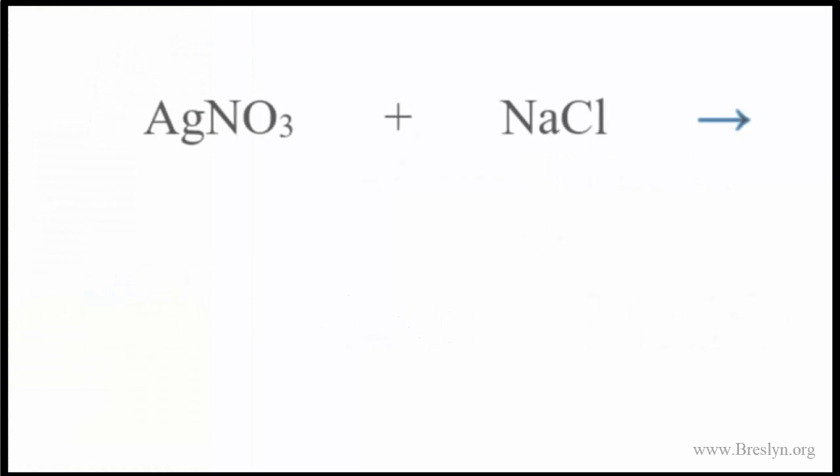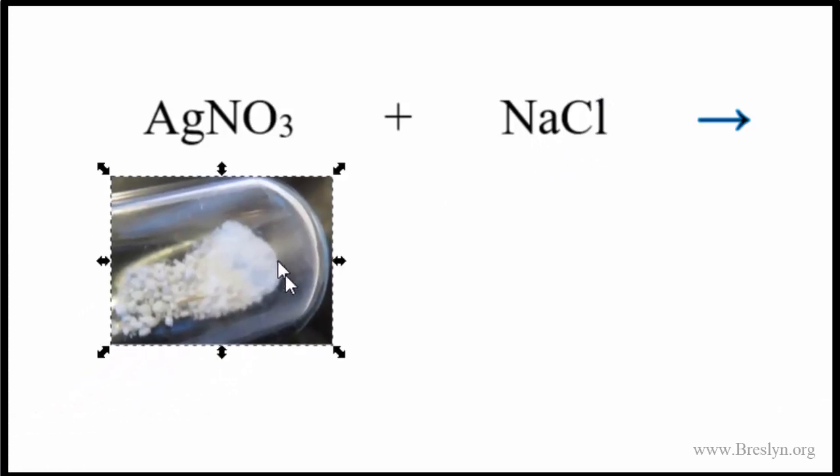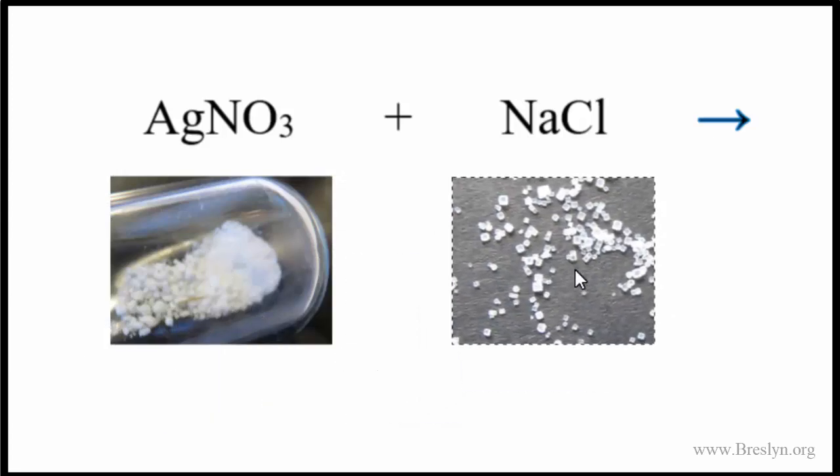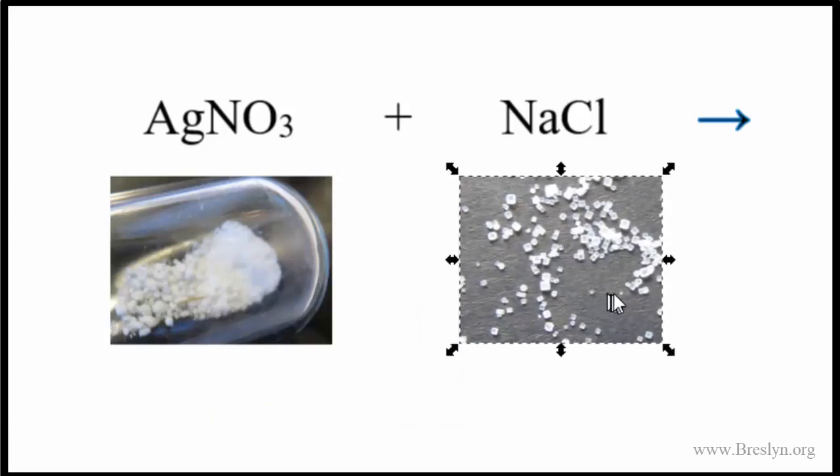Here is our silver nitrate AgNO3 and our sodium chloride NaCl. Silver nitrate is a crystal that looks like a white powder, and sodium chloride is table salt. But for net ionic equations, they take place in aqueous solutions, so we need to dissolve these in water for any reaction to take place.